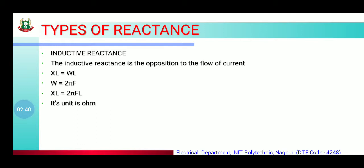Types of reactance में पहला टाइप है inductive reactance. The inductive reactance is the opposition to the flow of current. उसका formula है XL = ωL. Numerical में जहाँ omega और L की value given हों, directly put कर सकते हैं। अगर omega की value given नहीं है तो omega = 2πF, so XL = 2πFL. इसका unit ohm होता है।